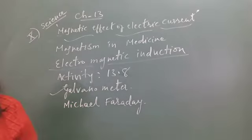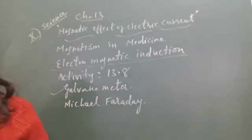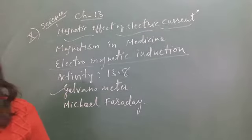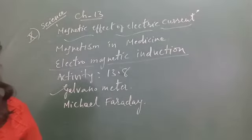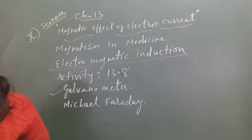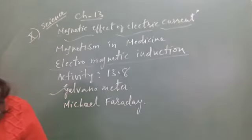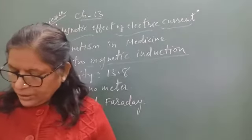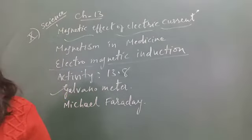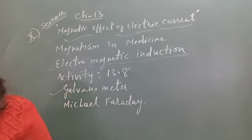What do you conclude from this activity? We can check if we move the south pole of magnet towards end B of coil, the deflection in galvanometer would be just opposite to previous case. When the coil and magnet are both stationary, there is no deflection in galvanometer. This is clear from this activity that motion of magnet with respect to the coil produces an induced potential difference, which sets up an induced electric current in the circuit.